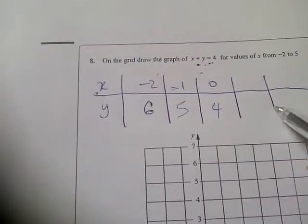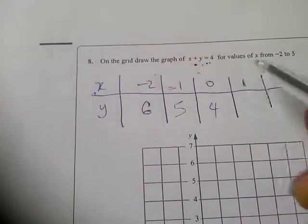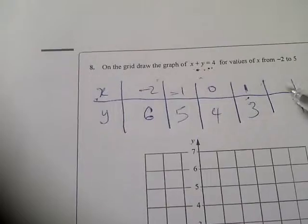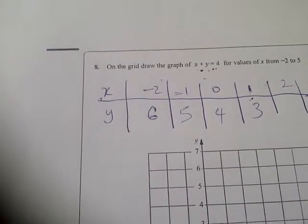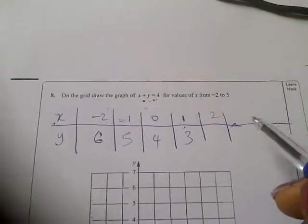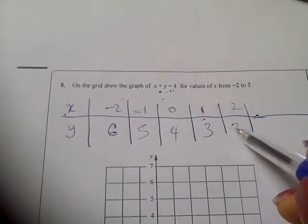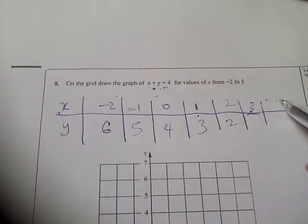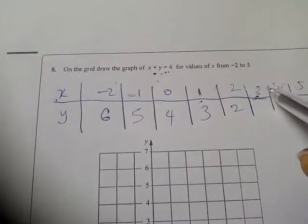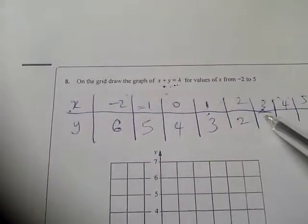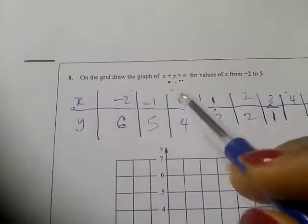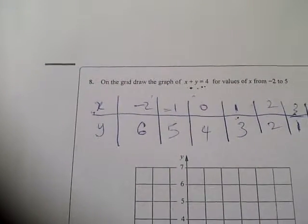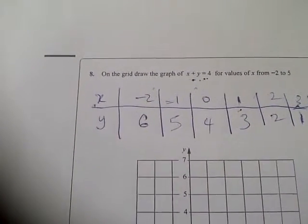Then when x is 1, y will be 3. When x is 2, y will be 2. When x is 3, y will be 1. When x is 4, y will be 0. And when x is 5, y will be minus 1.